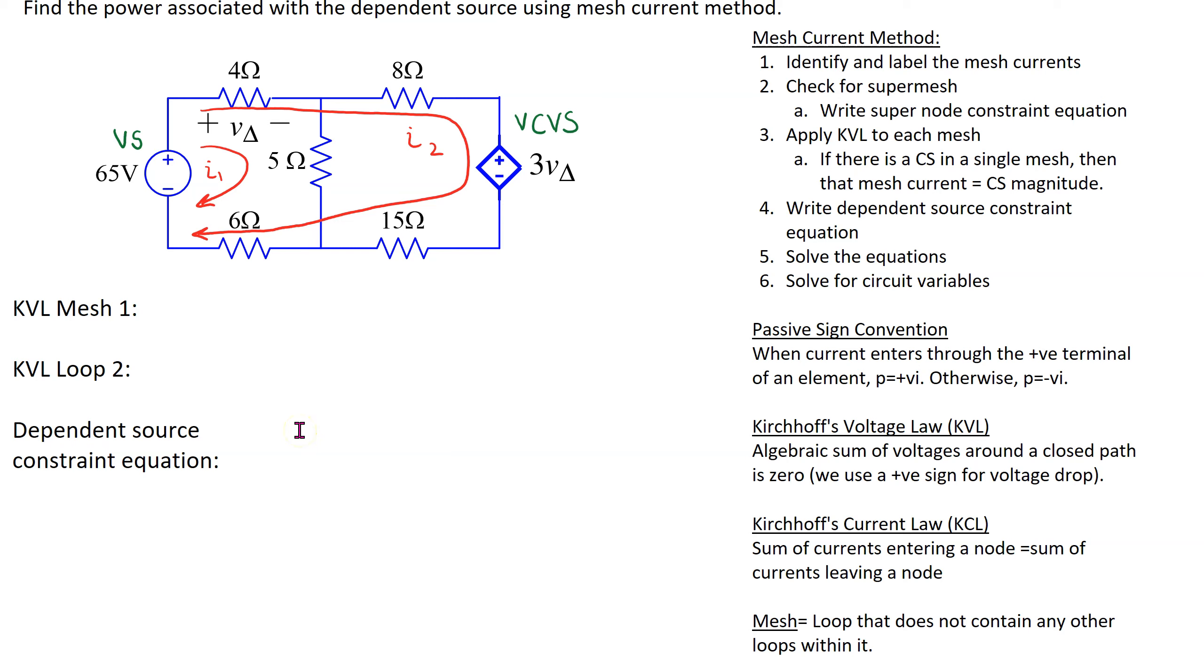In this video we will see that mesh current method still works even if we have a combination of loops and meshes in the circuit. Recall that a mesh is a loop that does not contain any other loops within it.